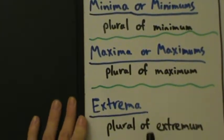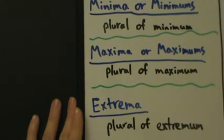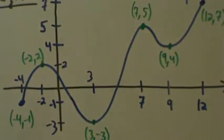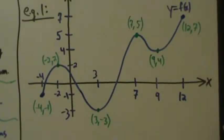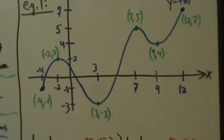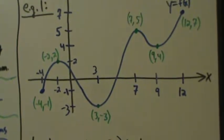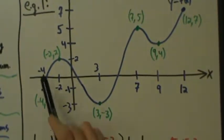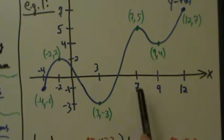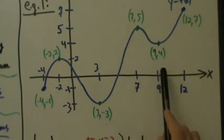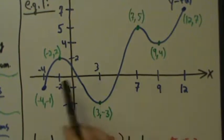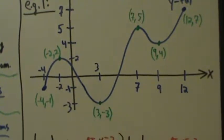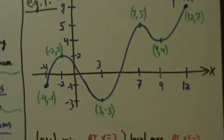So that's the new definitions. Let's look at this example. There is a point to this example, so let's look at it. We have points at negative 4, negative 1; negative 2, 2; 3, negative 3; 7, 5; 9, 4; and 12, 7. This is horribly not to scale, but that's okay — we don't have to worry about that.